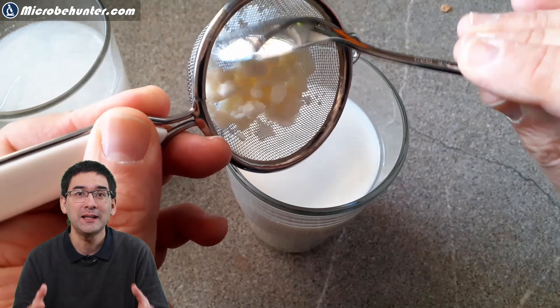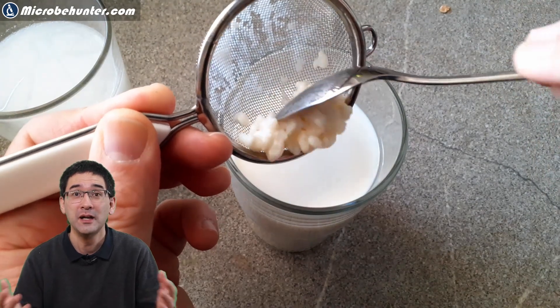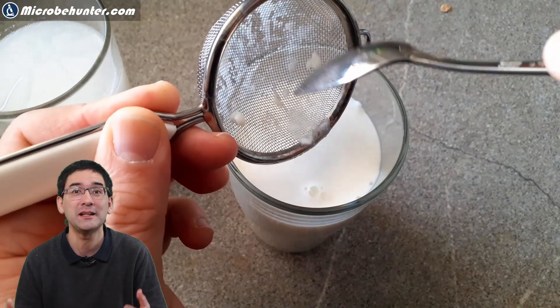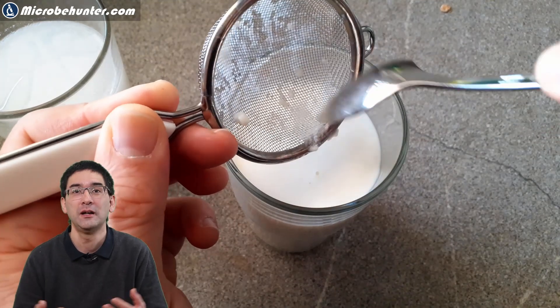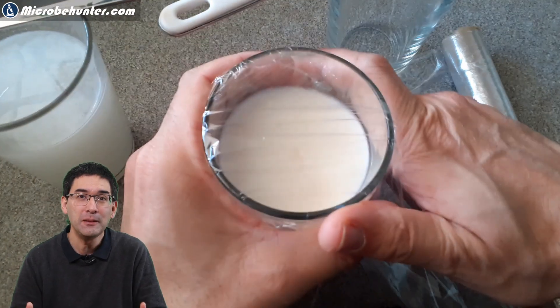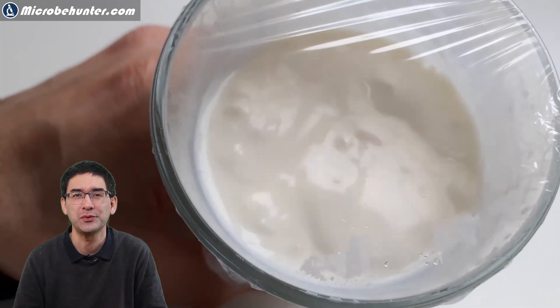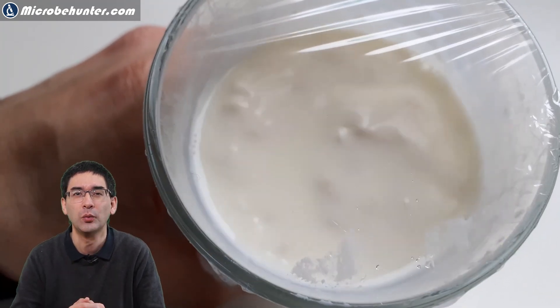In any case, I have now added the kefir grains to milk and I simply had to be a little bit patient and let it stand overnight. What's going to happen is that the bacteria and the yeast are going to start to ferment the milk. They're going to convert the lactose in the milk to lactic acid. A little bit of alcohol is also being produced as well, way less than one percent.